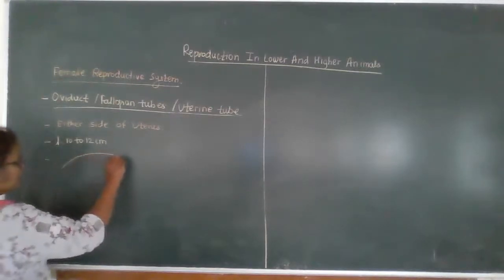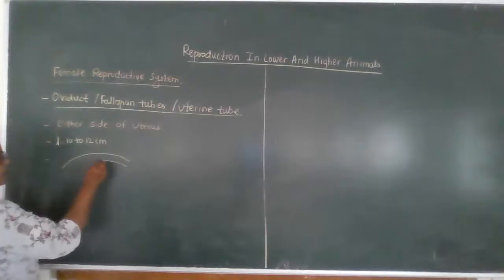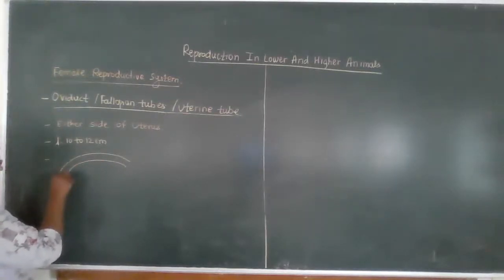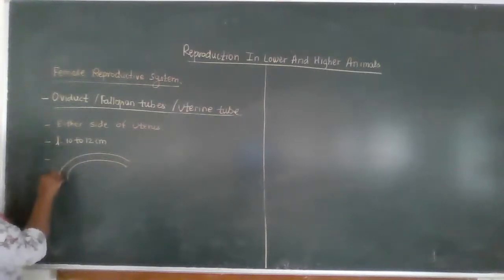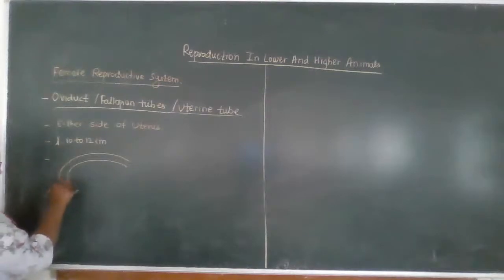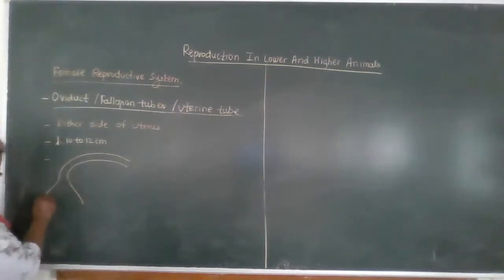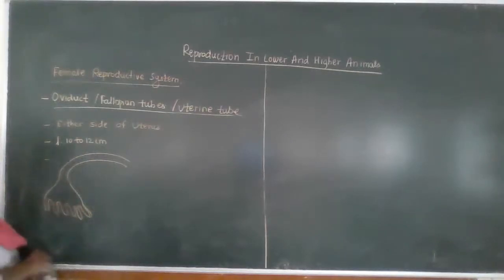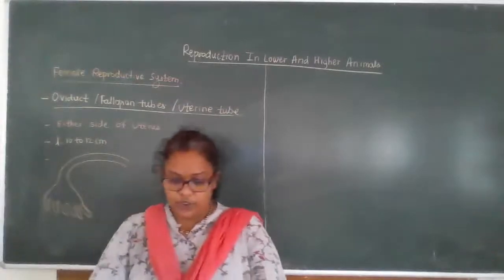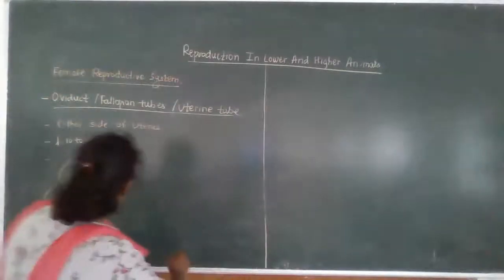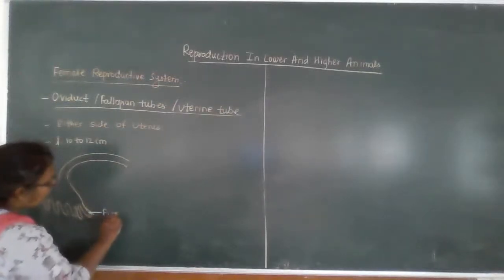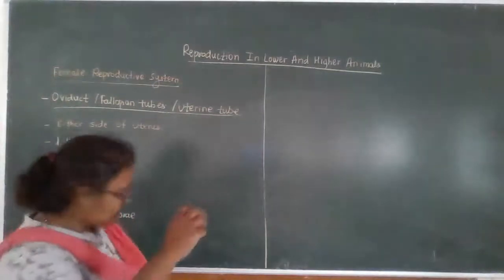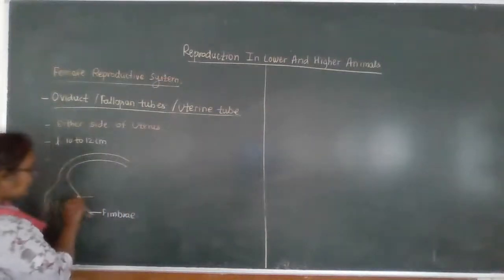So this is the oviduct or the fallopian tube. It has a broad funnel-like structure which has finger-like projections called fimbriae. The fallopian tube consists of fimbriae — finger-like projections — and a broad funnel-like structure called the infundibulum.